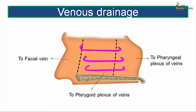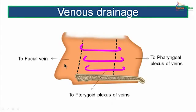For venous drainage, the lateral wall is divided into three areas. The anterior part drains into the facial vein. The intermediate part drains into the pterygoid plexus of veins, which is located in the infratemporal fossa related to the lateral pterygoid muscle. The posterior part drains into the pharyngeal plexus of veins.